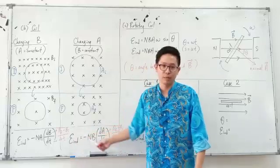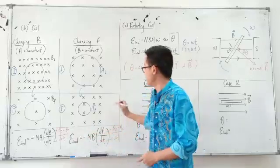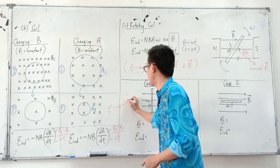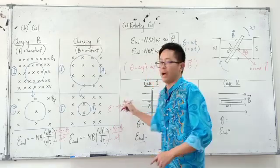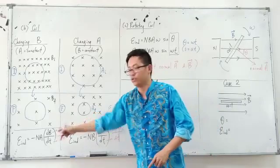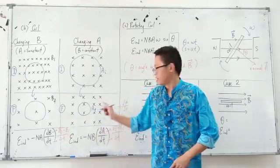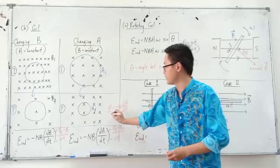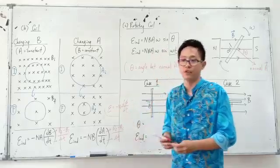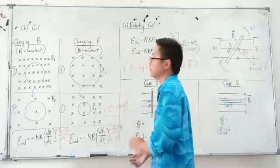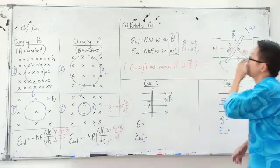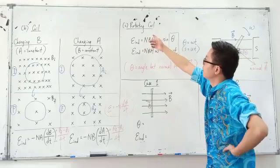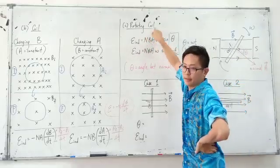Actually, these formulas come from the main formula, which is E equal to negative N times dΦ/dt. After derivation, only we get these two formulas. This is the main Faraday's formula. So the third case is about the rotating coil.